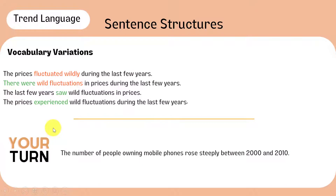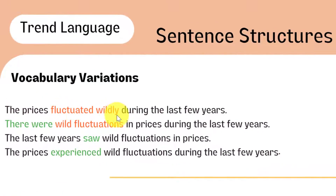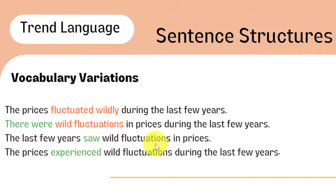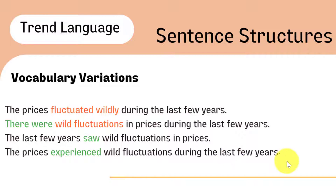You should also use a variety of vocabulary to improve your band score. Here are a couple of options you can use in your description: 'The prices fluctuated widely during the last few years.' 'There were wild fluctuations in prices during the last few years.' 'The last few years saw wild fluctuations in prices.' 'The prices experienced wild fluctuations during the last few years.'